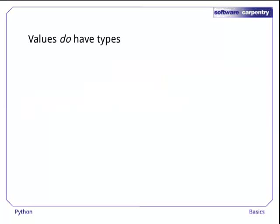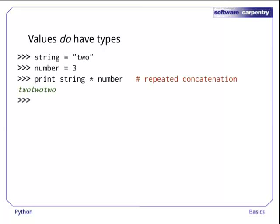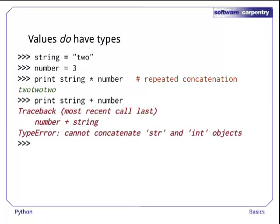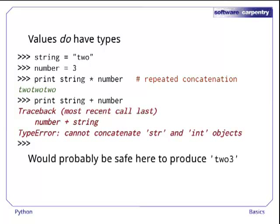In contrast with variables, values in Python do have types. For example, suppose we try to multiply a string by a number. Python is okay with this, and knows what times means when applied to a string and an integer. But if we try to add a string and a number, we get an error message, because Python doesn't know what plus means when applied to those types. In this case, you'd probably think that the string tw03 would be a sensible answer. But then what should be the result of adding the string digit 2 to the string digit 3? Should it be the string 23, or the integer 5, or the string containing the digit 5?